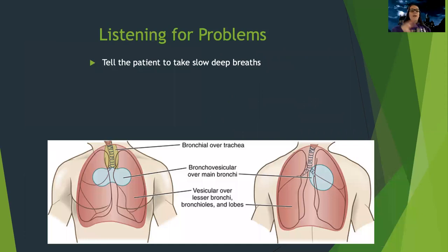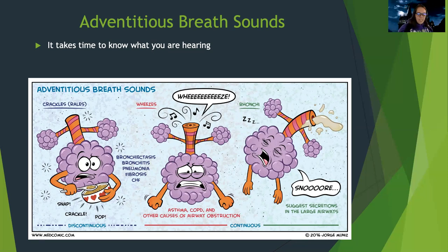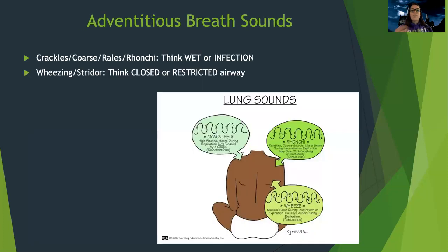We also want to listen for problems. Tell the patient to take slow, deep breaths — give them breaks rather than asking 15 times. We're listening for breath sounds, which should be clear. Note that adventitious breath sounds is a general term meaning something's not normal. At this level, we just want to know: is it clear, or is it diminished — really hard to hear? Abnormal breath sounds include crackles, coarse rales, or ronchi — all fancy words for something wet. It literally sounds like a washing machine; it sounds wet, often indicating infection.